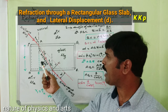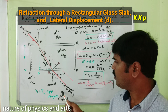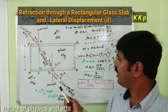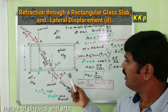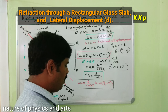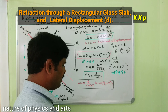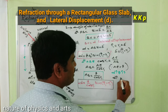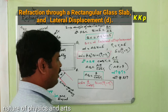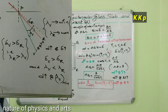When light travels from a rarer to a denser medium it bends towards the normal — that ray is the refracted ray. When it moves from denser to rarer medium it bends away from the normal — that is the emergent ray, which is parallel to the incident ray. d is the lateral displacement, and the proof of lateral displacement is completed. The lateral displacement increases with increasing angle of incidence, and also increases with increasing refractive index of the glass, and increases with increasing thickness of the glass.